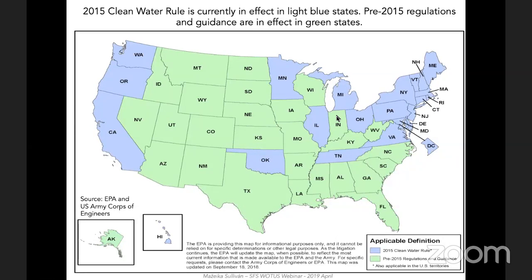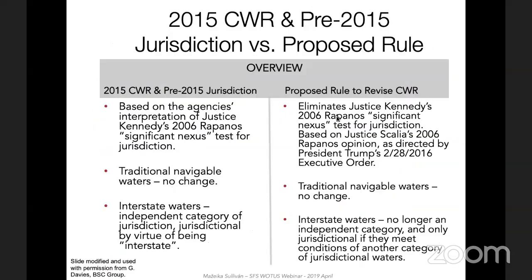To be clear, the proposed rule to revise the definition of WOTUS is not currently in effect. Currently, the 2015 Clean Water Rule is in effect in 22 states, D.C., and U.S. territories, depicted by light blue. In 28 states, the pre-2015 regulations and guidance are in effect, depicted in light green. What are the key differences in the proposed rule versus the 2015 and pre-2015 jurisdictions? There are many.